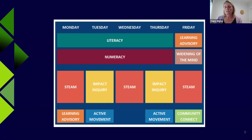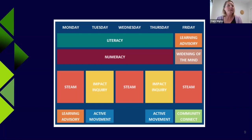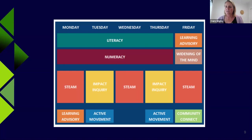We have two two-hour slots of impact inquiry per week. The first in semester one is rotating around the different types of inquiry bubble you're going to be in, and then the last one is working through an impact inquiry project. Learning advisory is our form room time, where we also do New Zealand histories and health curriculum. Active movement happens every day in the junior school — this varies, I have a hikoi class so we do a lot of walking — but we're preferably outside, trying to improve wellbeing by being connected to the outdoors and moving around.